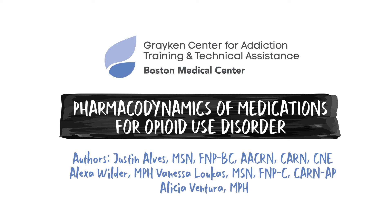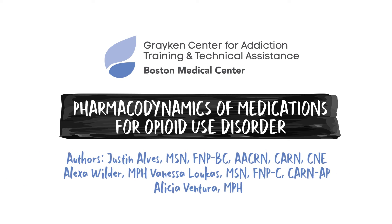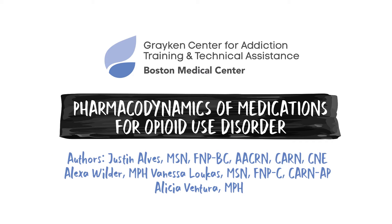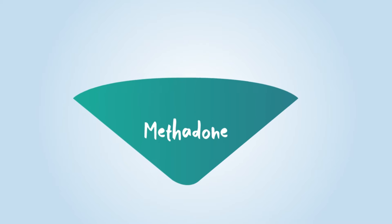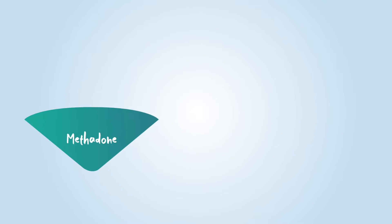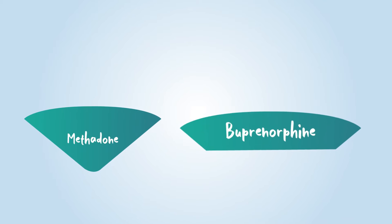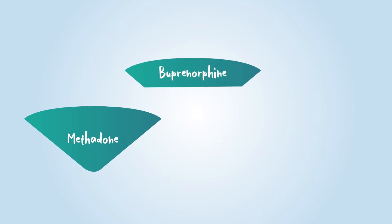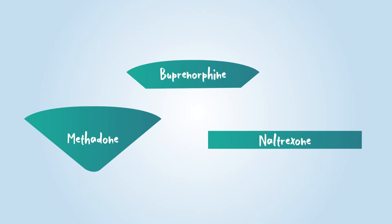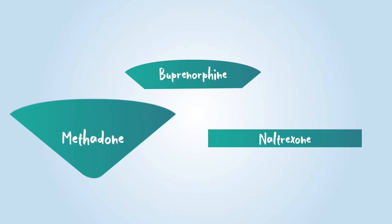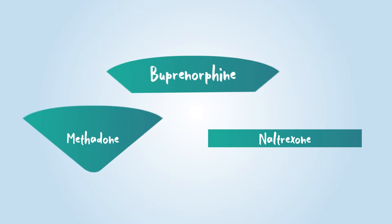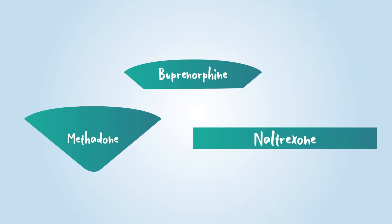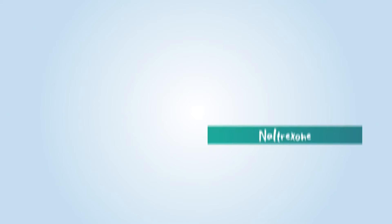Pharmacodynamics of Medications for Opioid Use Disorder. The U.S. Food and Drug Administration has approved three medications for the treatment of opioid use disorder: methadone, buprenorphine, and naltrexone.